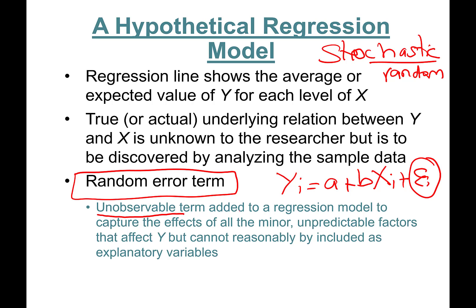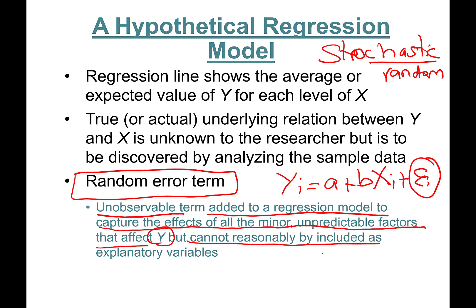The error term is an unobservable term added to a regression model to capture the effects of all minor, unpredictable factors that affect Y but cannot reasonably be included as an explanatory variable.